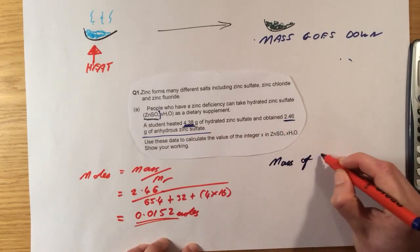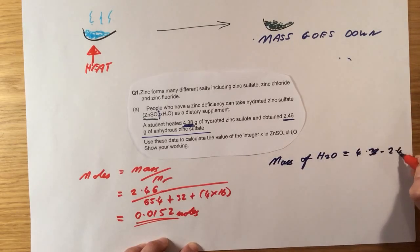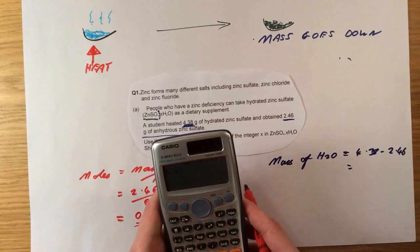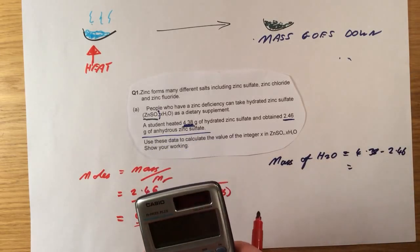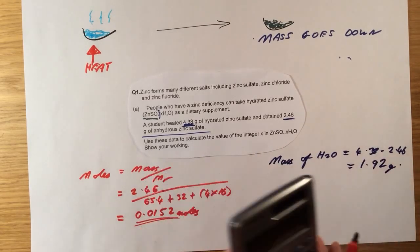So in this case, mass of H2O is 4.38 minus 2.46 which is going to be 1.92. I should have really done that without a calculator. Never mind.